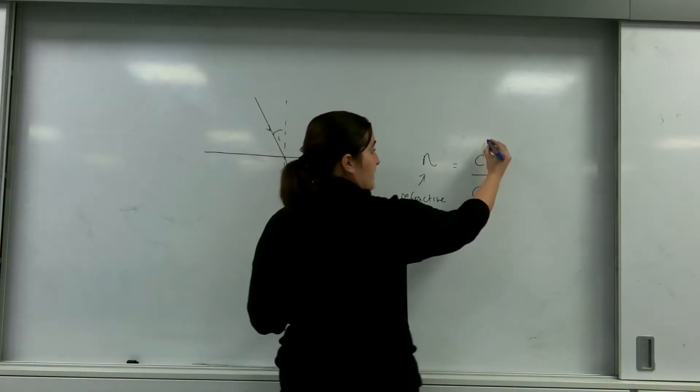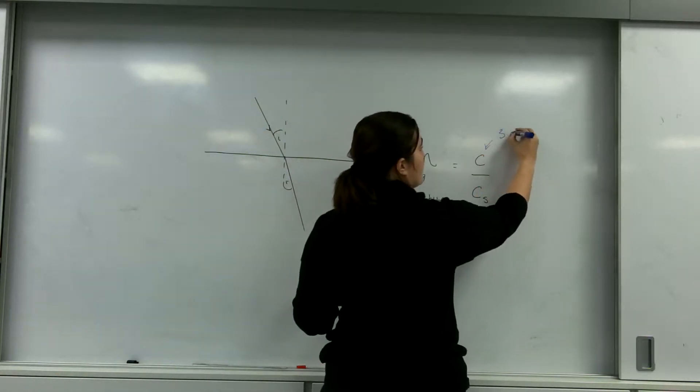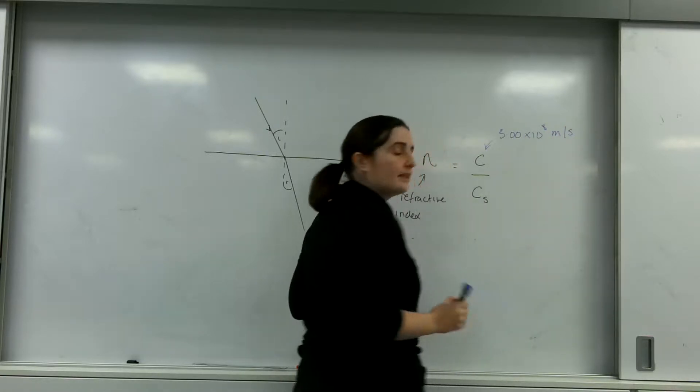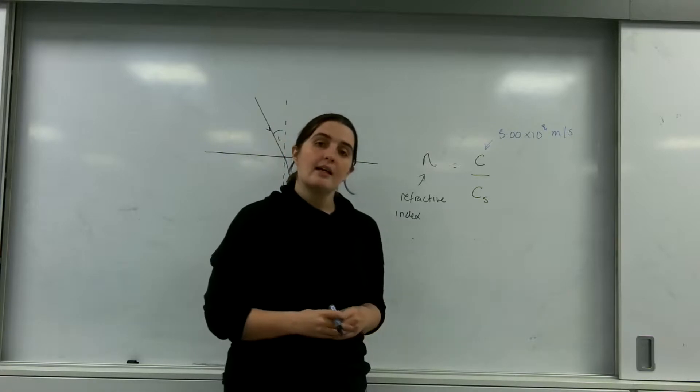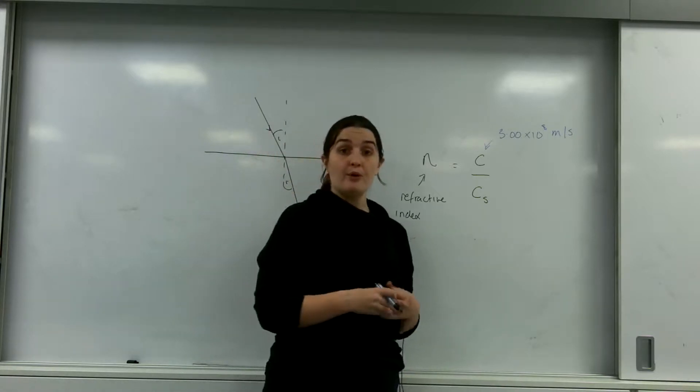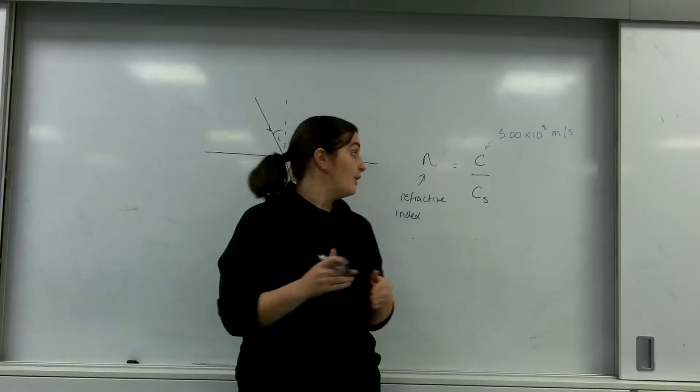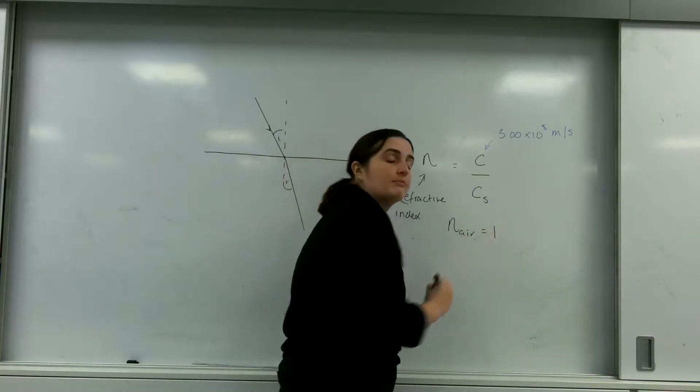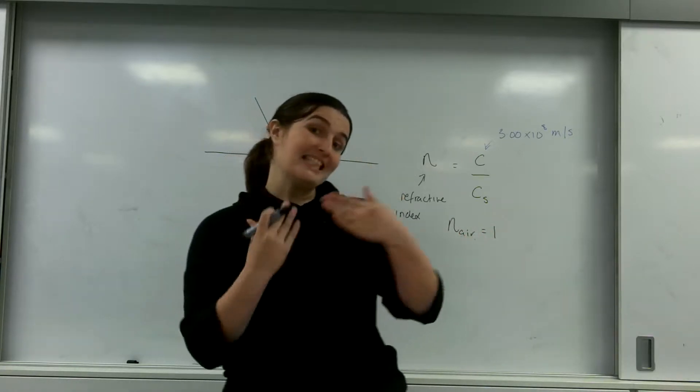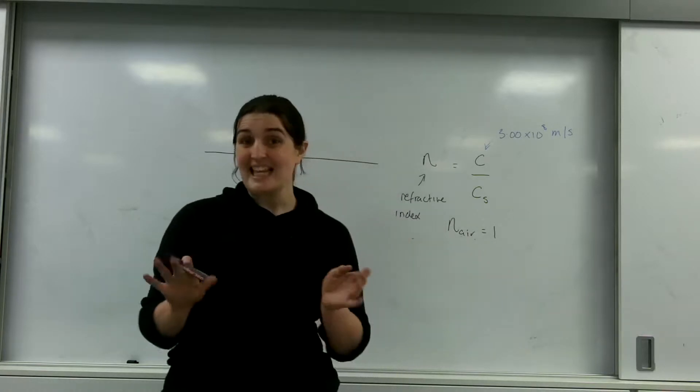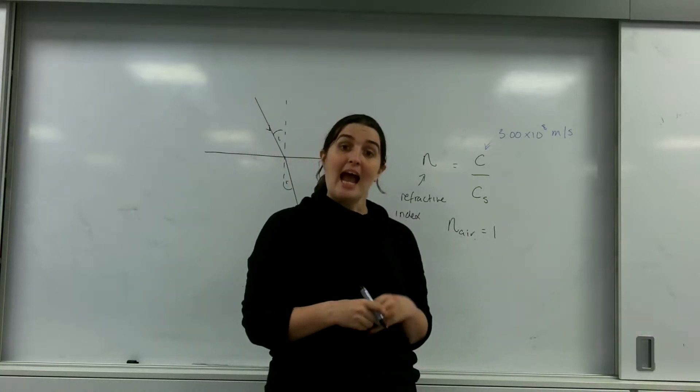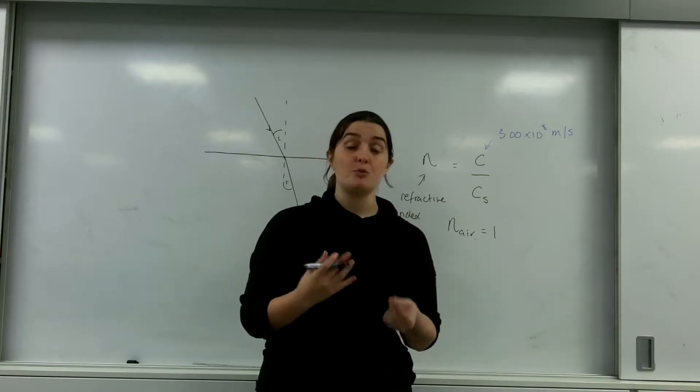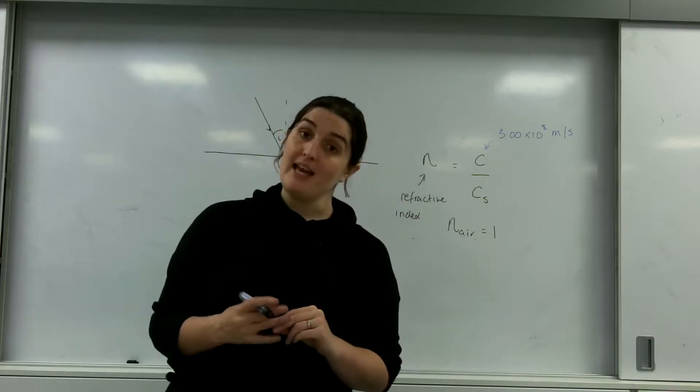Remember, the speed of light is 3.00 times 10 to the 8 meters per second. It's also important to note that you have to know that the refractive index of air is 1. We assume that light isn't affected by air. It's exactly the same as it was in a vacuum. And this is important for formulae that you're going to use. The exam board assumes you know that the refractive index for air is 1.